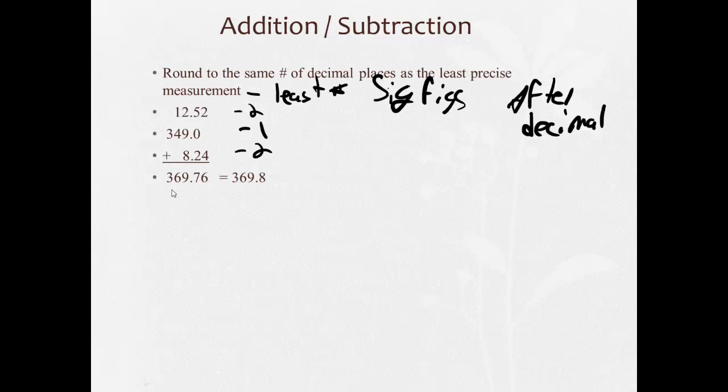Plug this into our calculator, we get 369.76. However, we're only allowed one after the decimal, because that's our least precise. So we round that using standard rounding rules we should know from math class to 369.8.